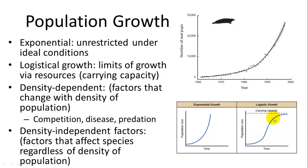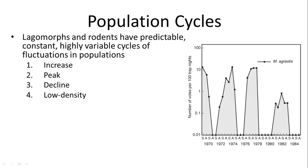How growth rates occur is a function of both density-dependent and density-independent factors. Density-dependent factors change according to how many are in the population — competition, disease, predation, and food availability all worsen as population density increases, and disease is more often transmitted in higher density populations. Density-independent factors affect all individuals regardless of population size — an oil spill, for example, would kill whatever species get into the oil regardless of how many there are.